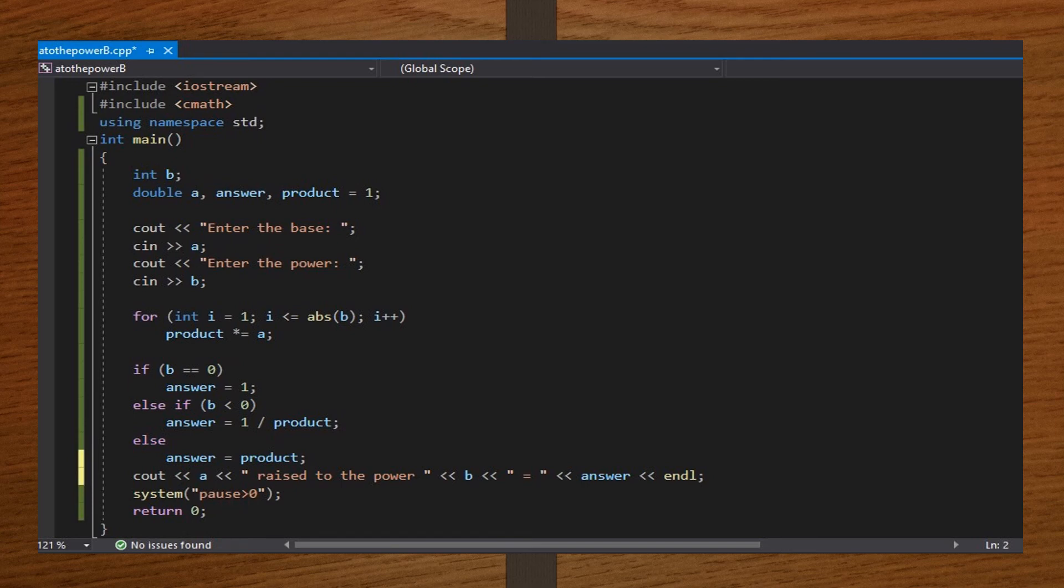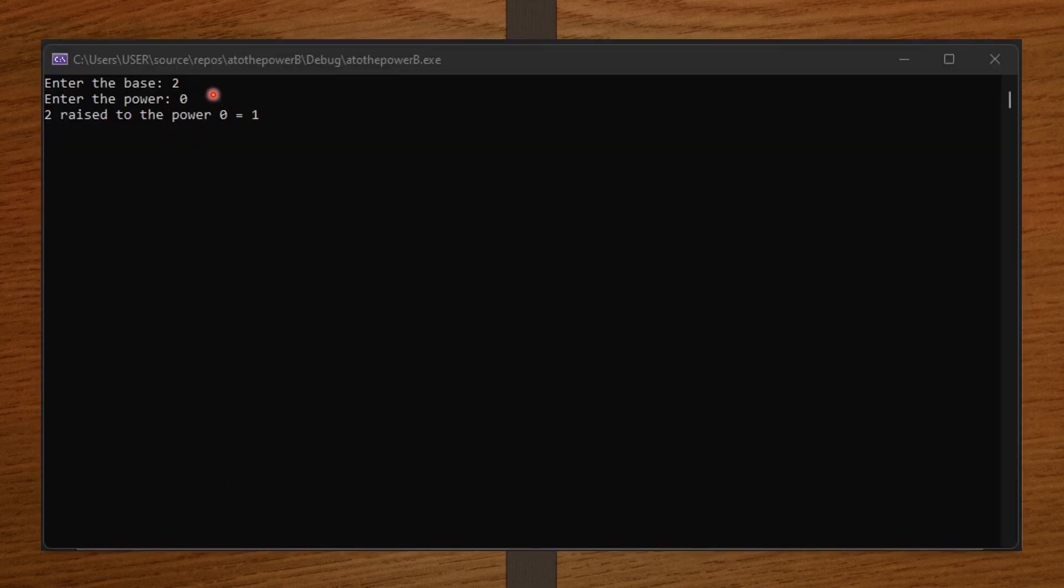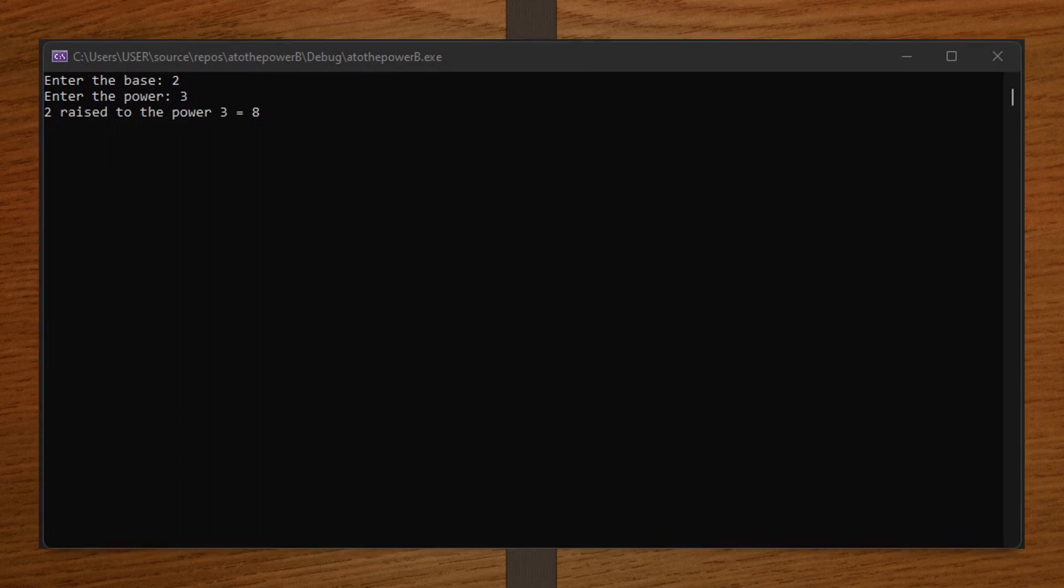Alright, now let's input some values for the base and then the power and see how it runs. So, I'll take the base to be 2 and the power to be 0. Now, you can see that we have 1 because we know that any non-zero number raised to the power 0 is 1.